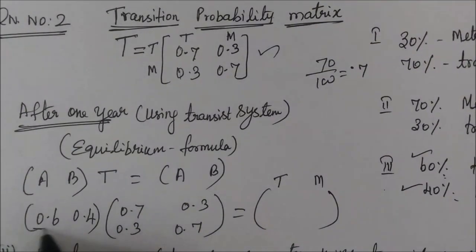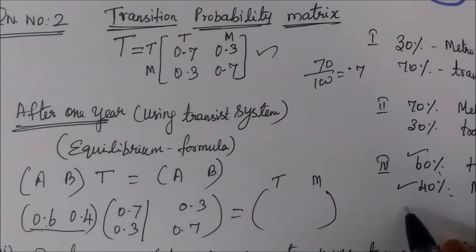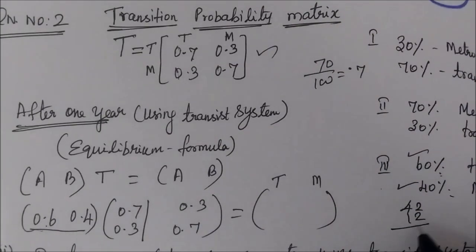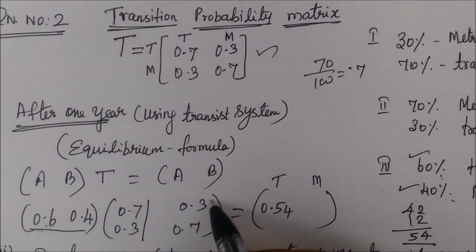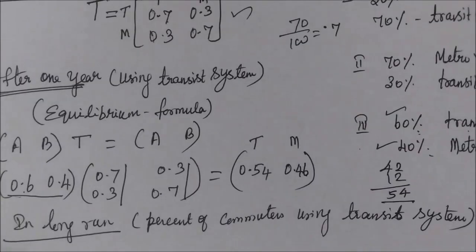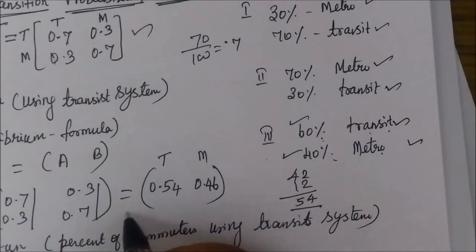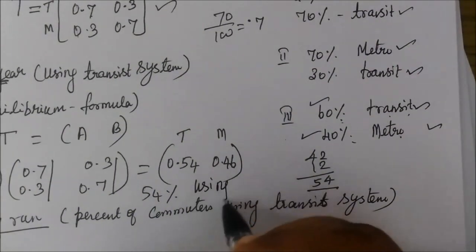Using the first row and first column of the matrix — this is the original calculation — 46% are using Transit and 46% using Metro. This gives us 54% using Transit after one year.